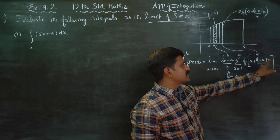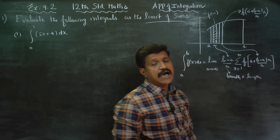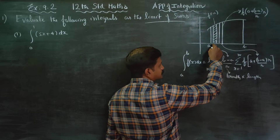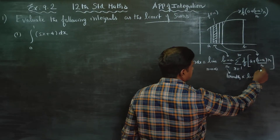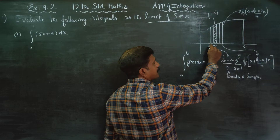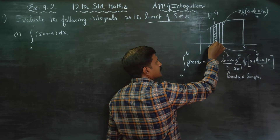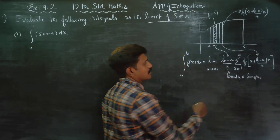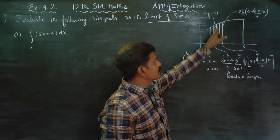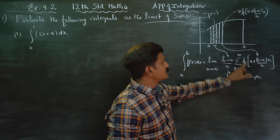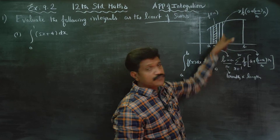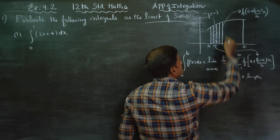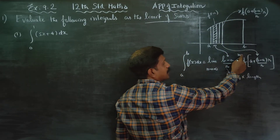f of (a + (b minus a) into r by n) is the height of each rectangle. Here r is a counter: r equals 1 for the first rectangle, r equals 2 for the second, r equals 3 for the third, and so on up to n.